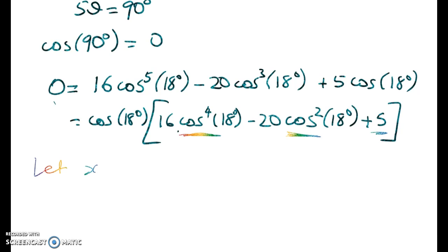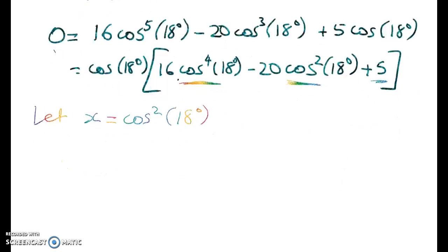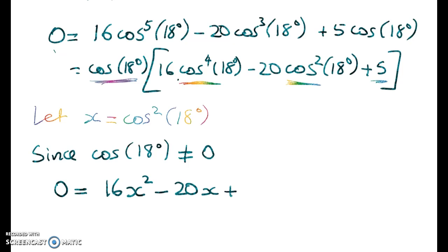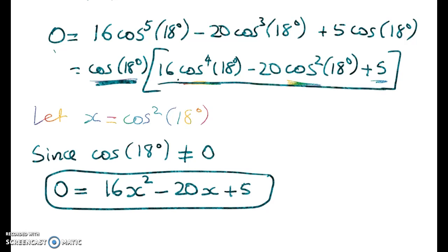So if we let x equal cos squared of 18 degrees, we can simplify all of that. Now the first thing to notice is that we can divide through by cos of 18 degrees. The reason we can do that is we know that it's not equal to 0. And when you're working at high levels of maths, you need to make sure that you explain things like that concisely. So since cos of 18 degrees is not equal to 0, we get 0 is equal to 16x squared minus 20x plus 5. So what have I done there? I've divided through by the cos of 18, and then I've made this substitution to dramatically simplify my problem.